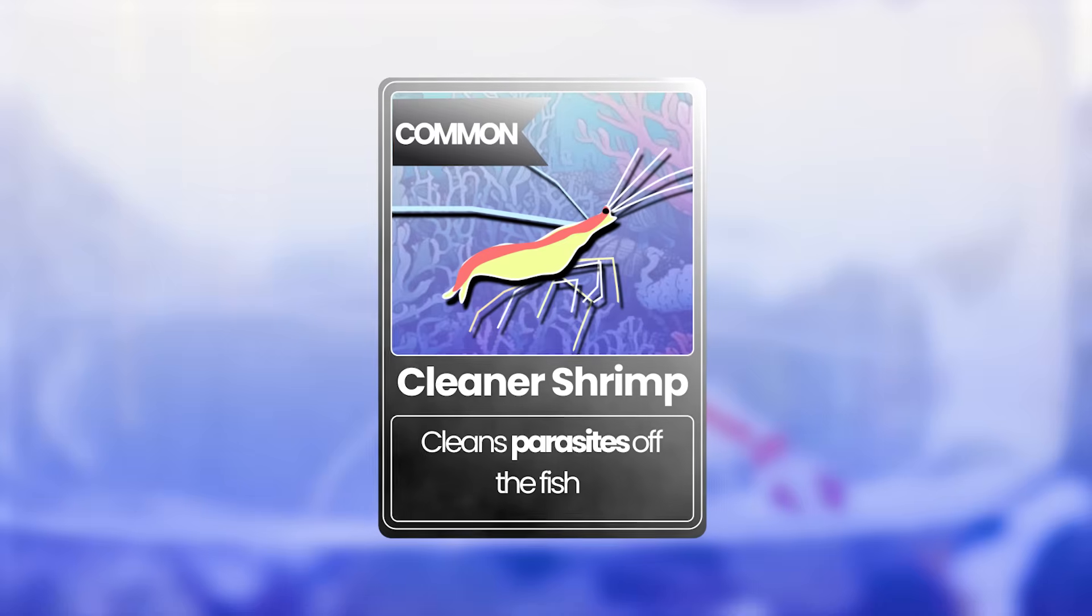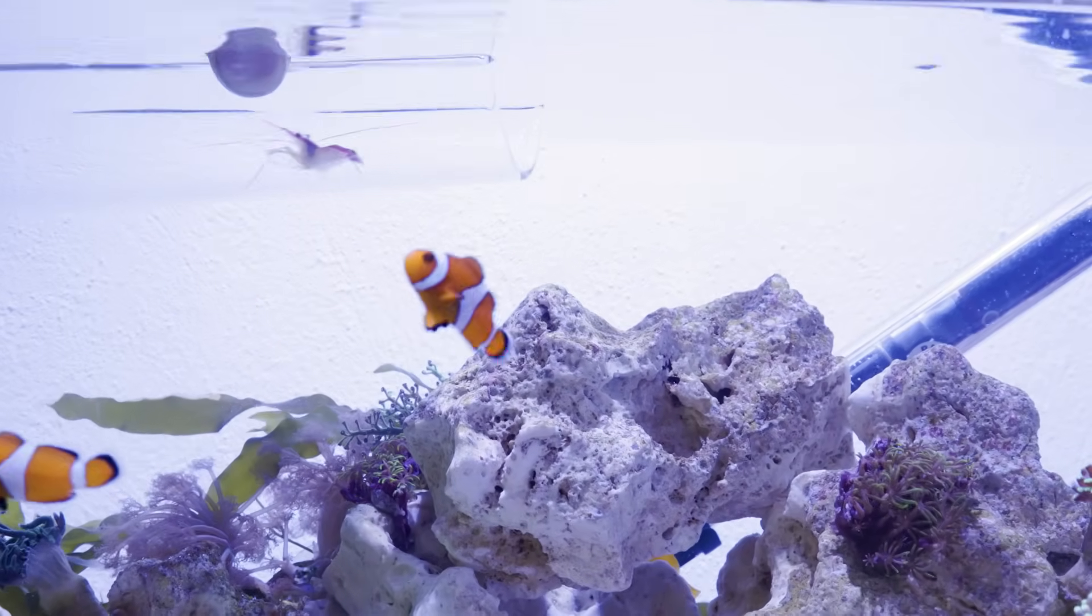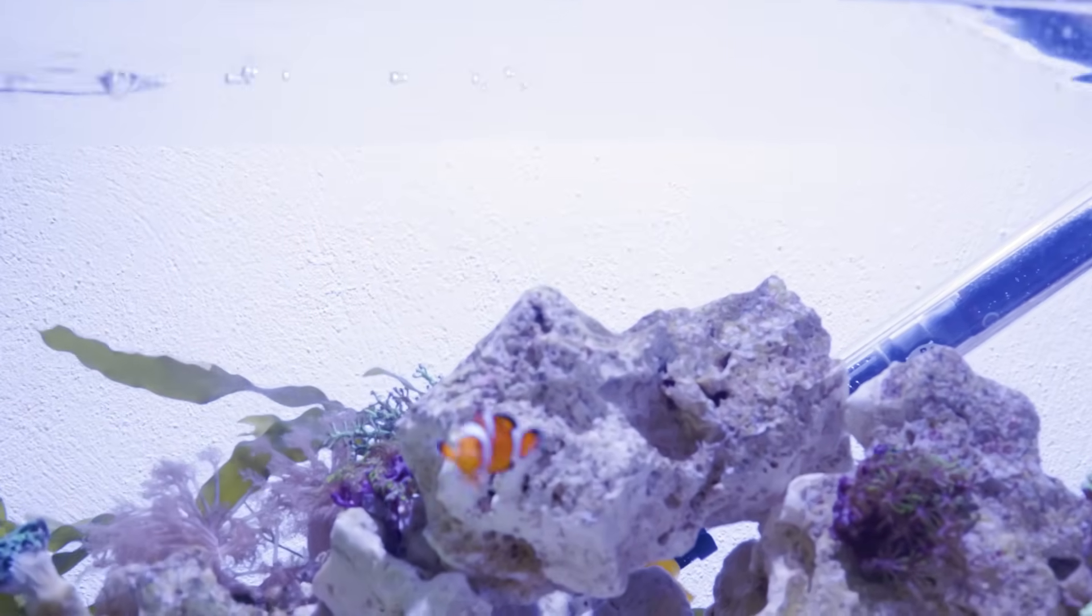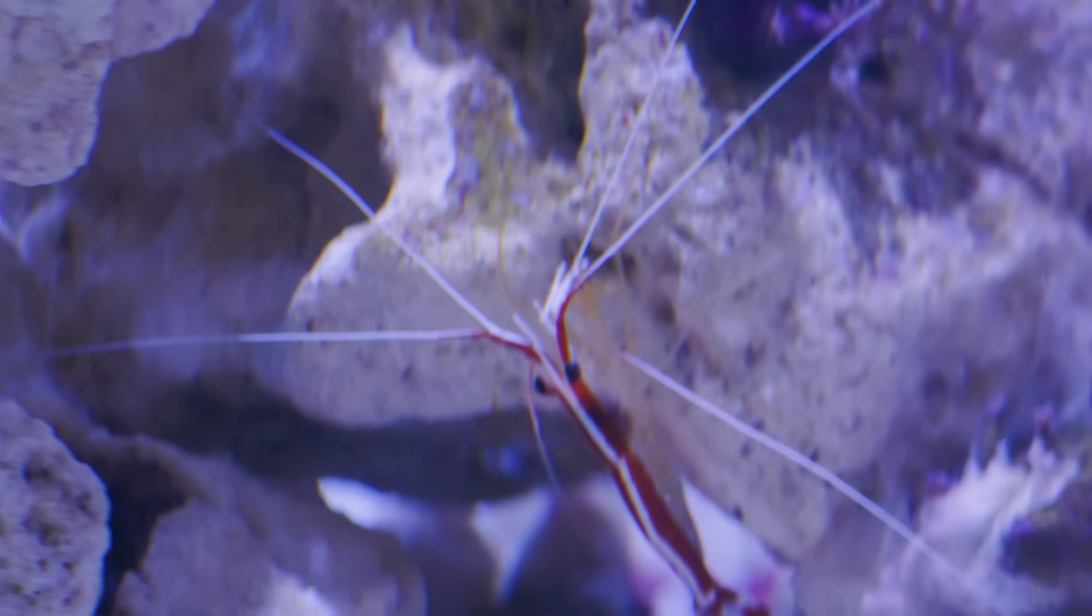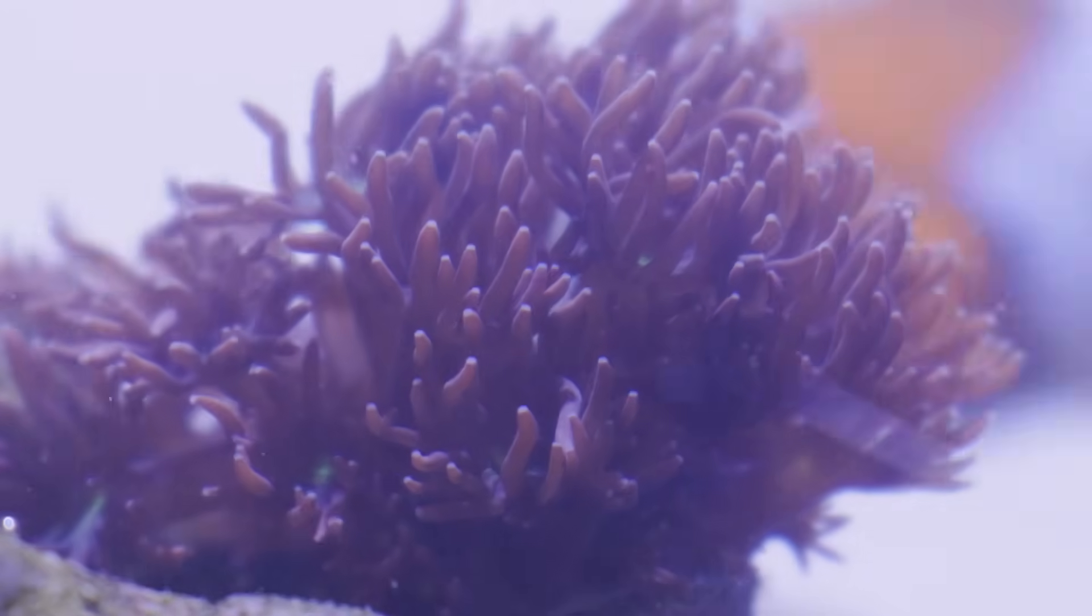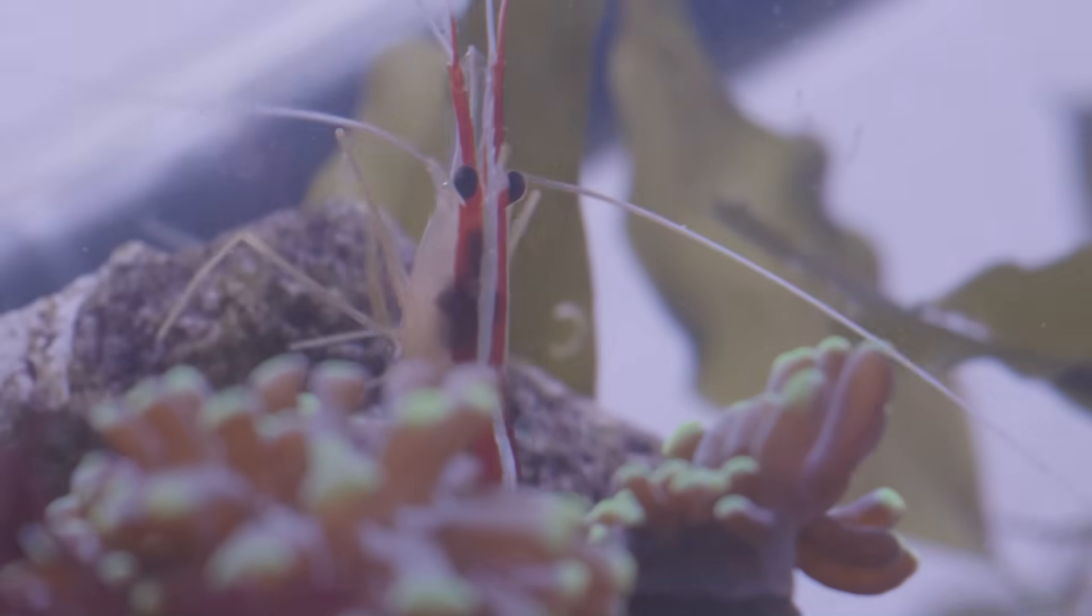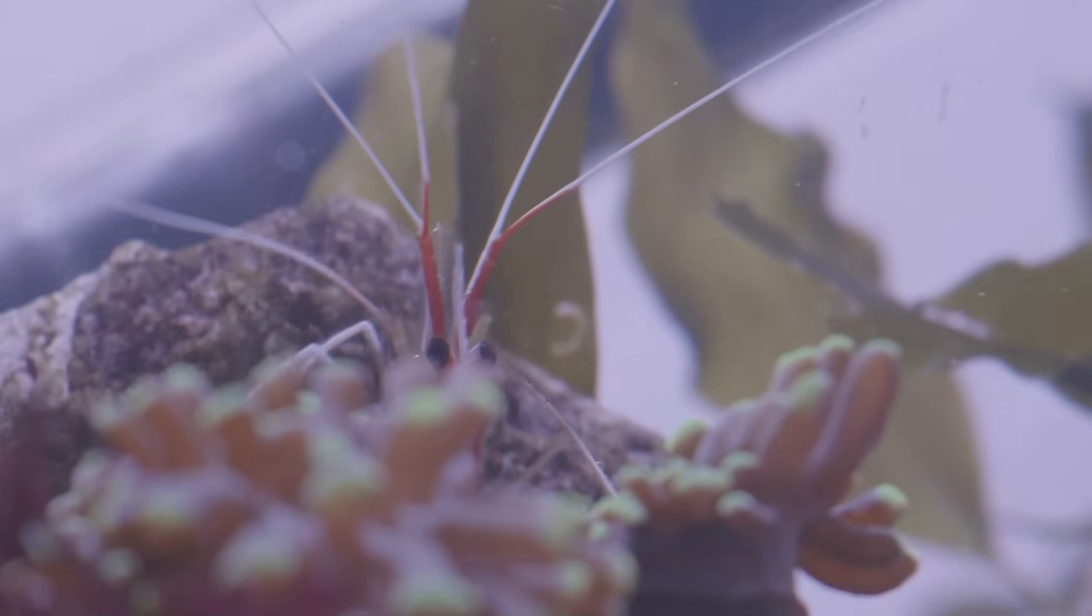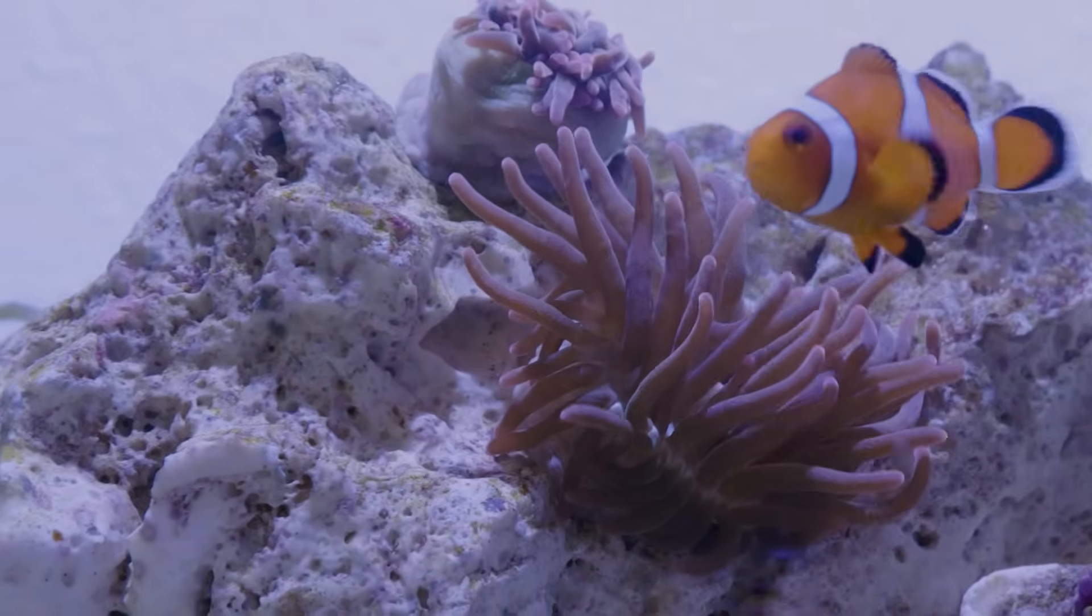And our resident doctor on the reef, the humble skunk cleaner shrimp. They are the happiest when fish come by its cave for a clean, as in the wild it feeds mainly off parasites living on the fish. And this flowerpot coral or Goniopora enjoys letting its polyps flow with the waves. It may take some time for the clownfish to host the anemone, but once they do they become inseparable.